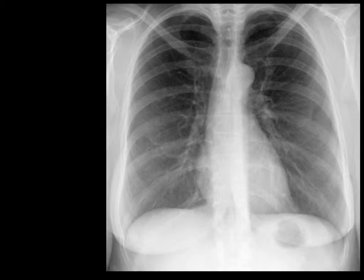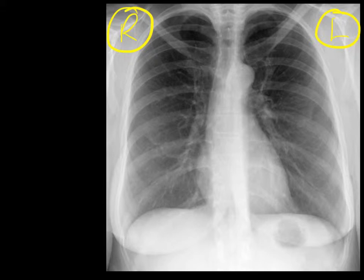Before we learn about pneumonia and the silhouette sign, we need to learn a little bit of basic chest X-ray anatomy. This is a frontal chest X-ray — it's called a frontal chest X-ray because it looks as if we're looking at the patient from their front. This is the left side of the patient, and this is the right side of the patient. Each lung is divided into a number of distinct anatomical parts or lobes.